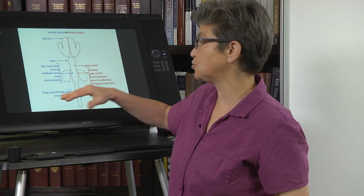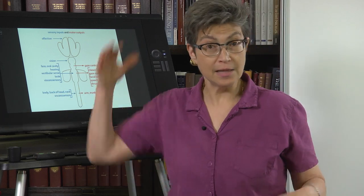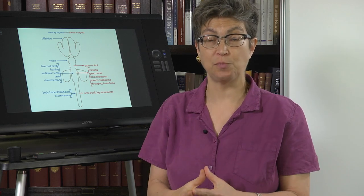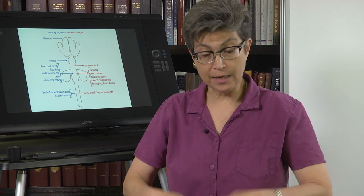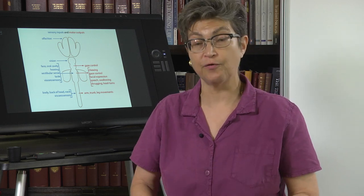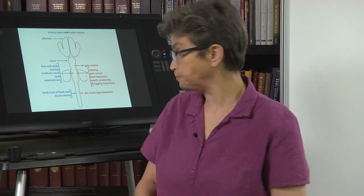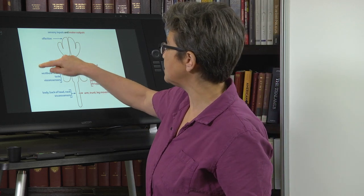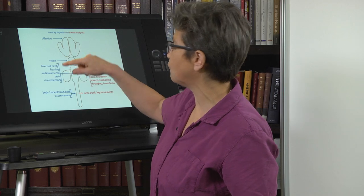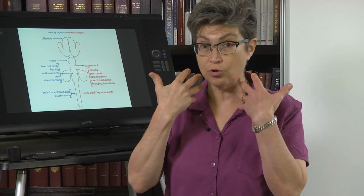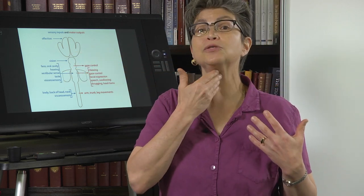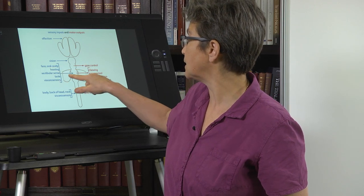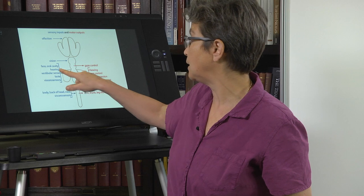The somatosensory from the body, the back of the head, and the neck — that all comes into the spinal cord. In addition, we get a lot of information from the viscera into our spinal cord. And then there is information from our face and the oral cavity going into our throat that comes into the hindbrain.